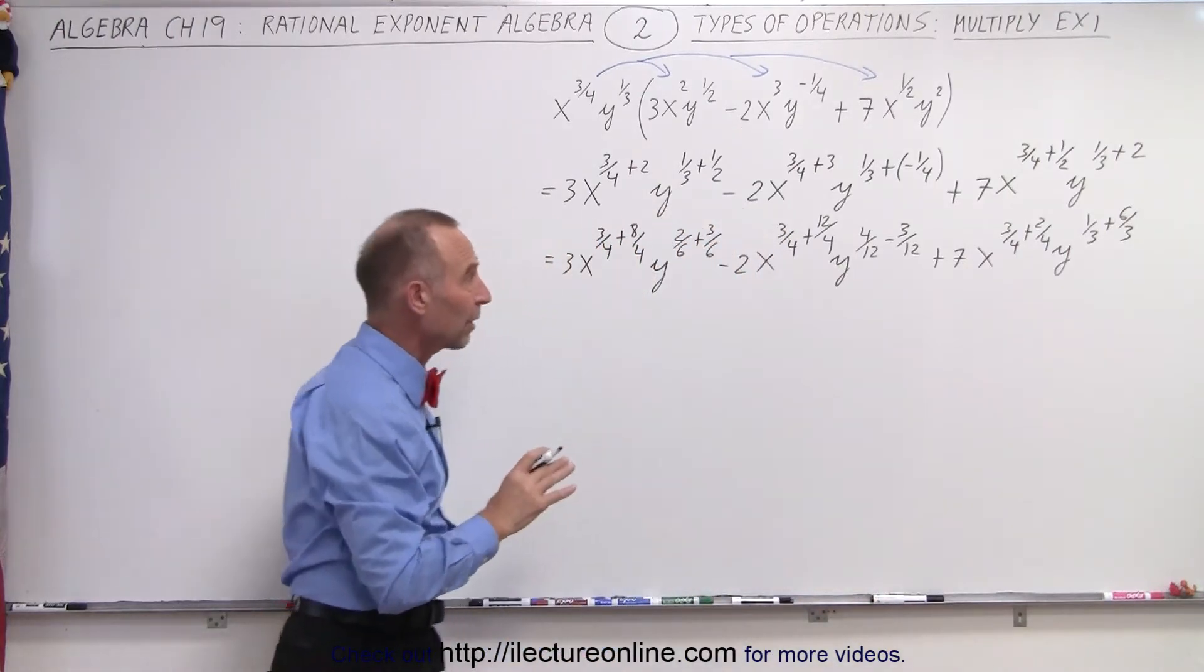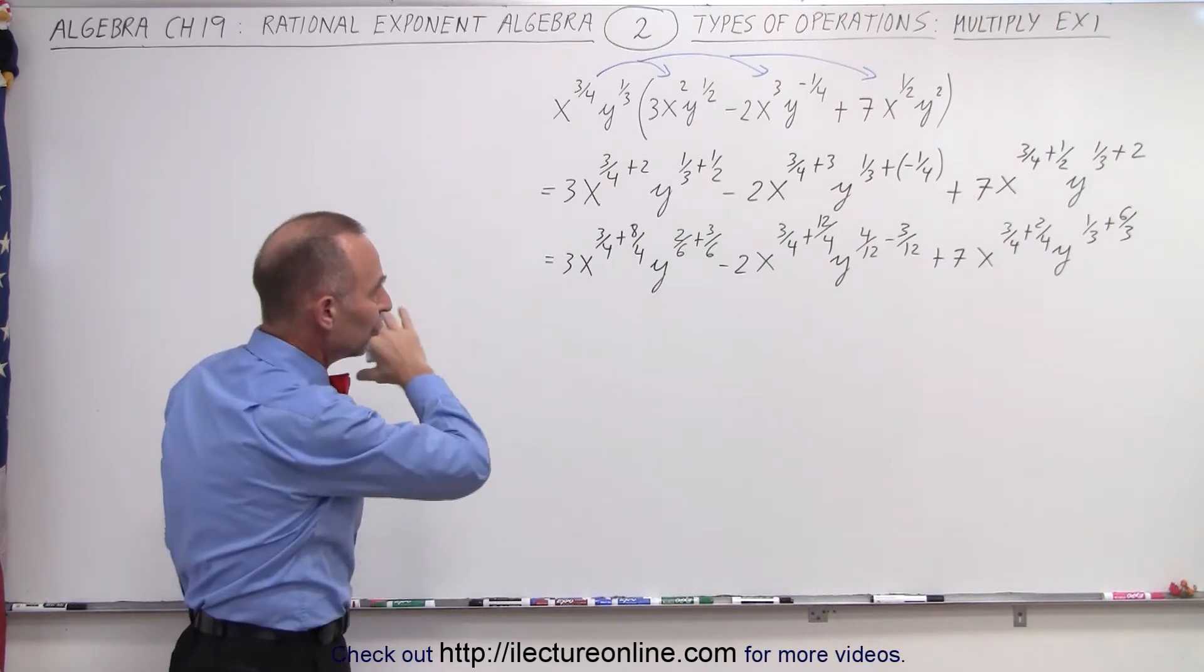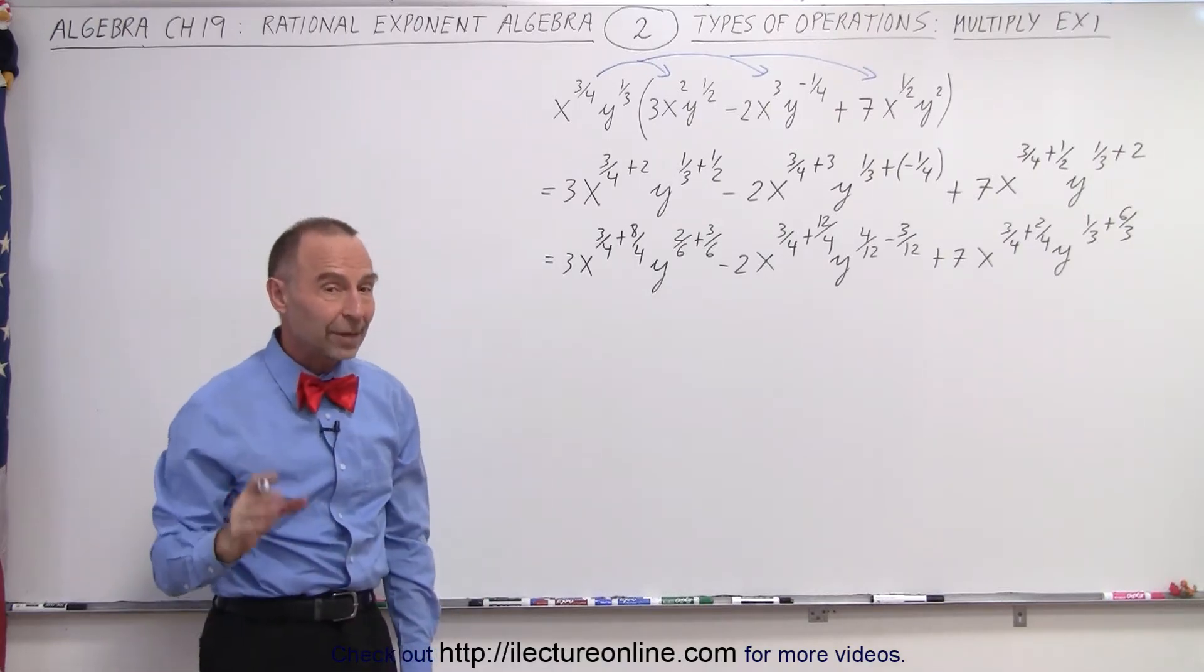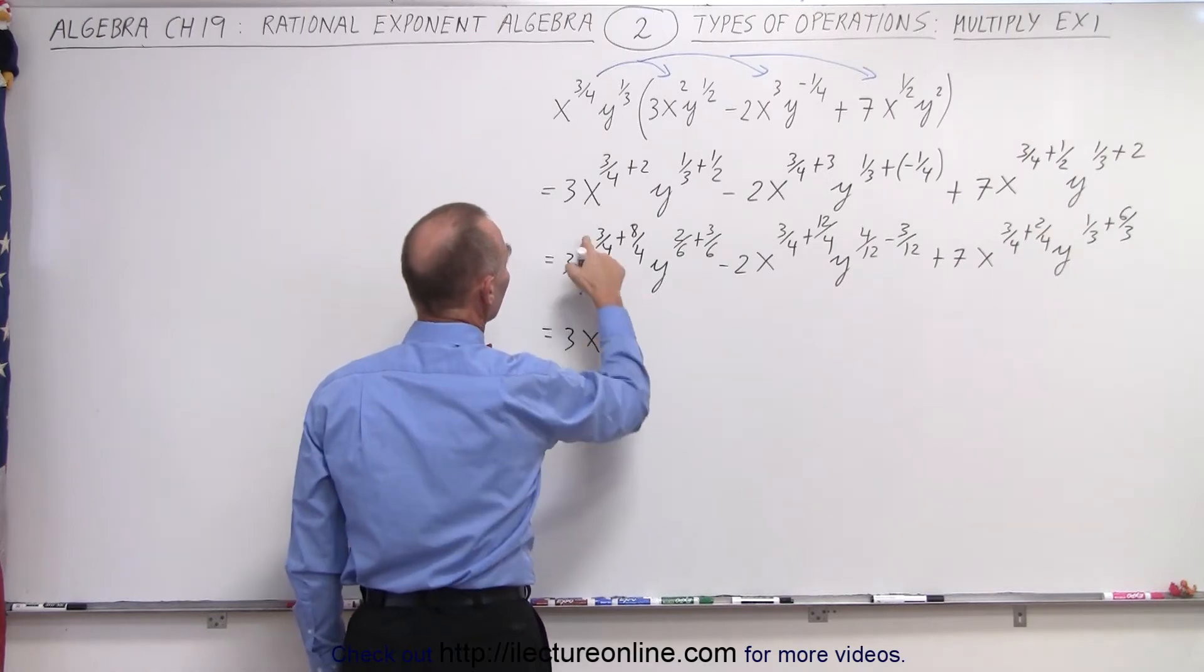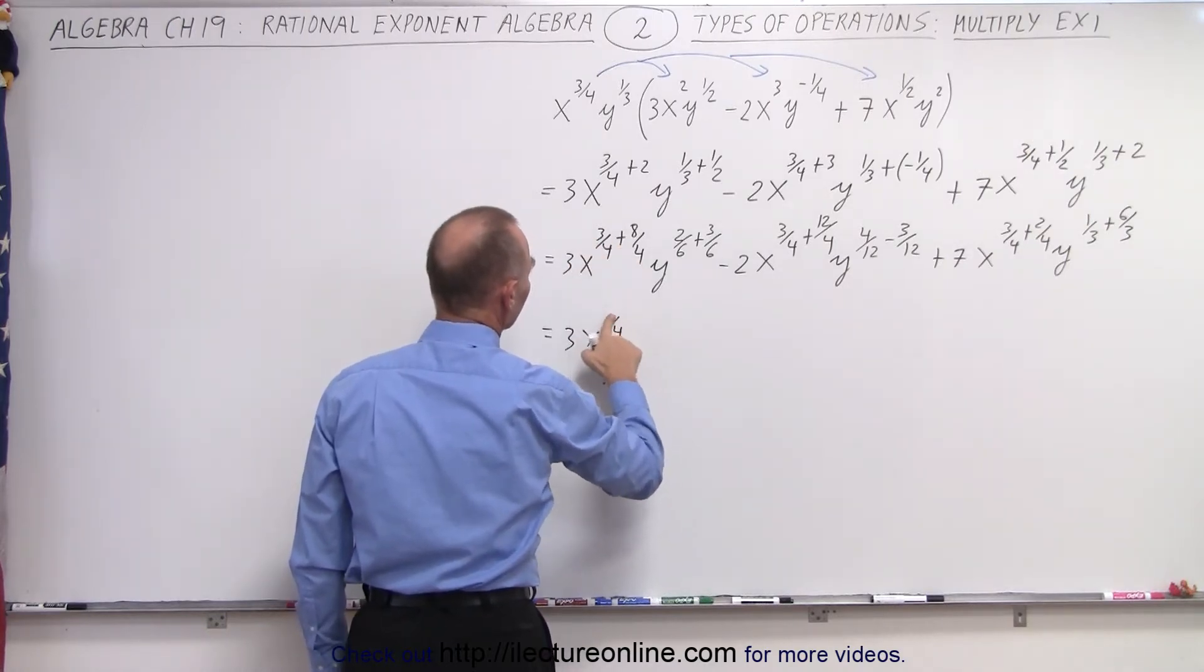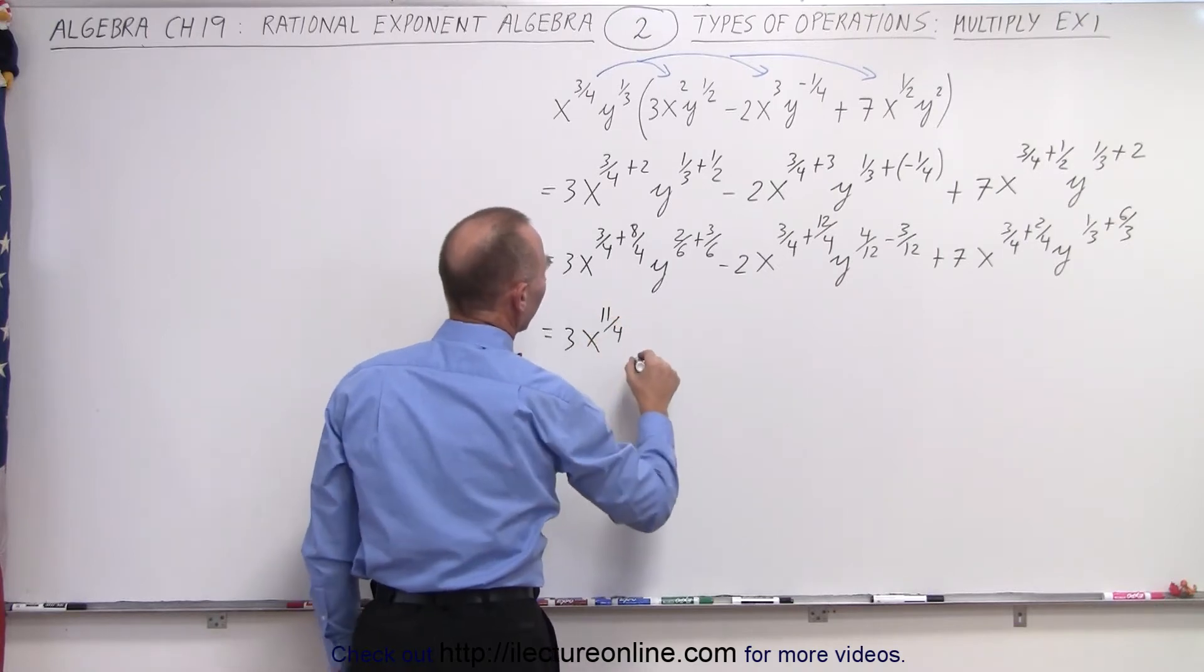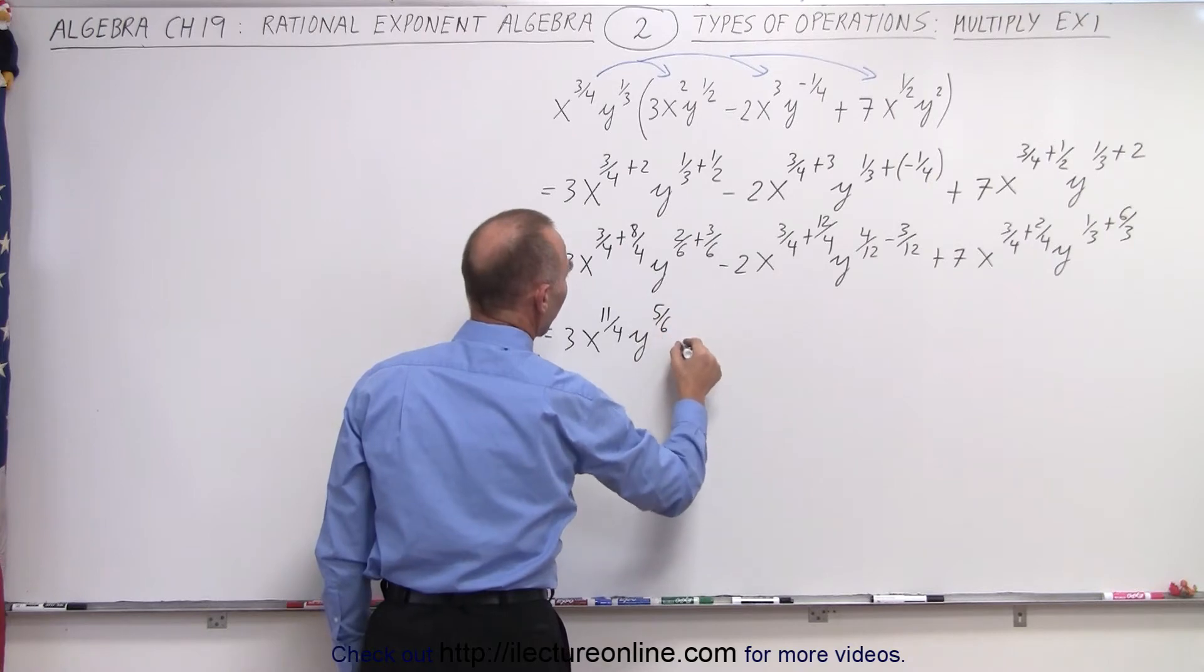So, it's always a good idea to check to make sure you converted each exponent correctly. Now, notice we have all the exponents over the same common denominator, so now this can be written as three x to the three plus eight, which is eleven fourths. That's not that good looking eleven, here we go.